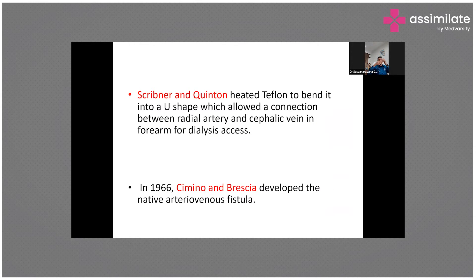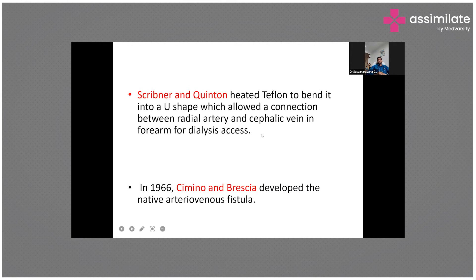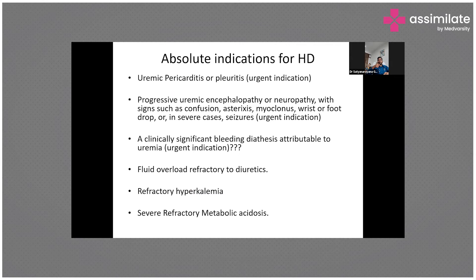For dialysis, we need vascular access. We take blood through an artery and pump it back into a vein; when the two are joined, it is called a fistula. The first access was the Scribner shunt — a metallic shunt placed between the radial artery and cephalic vein. The first true arteriovenous fistula was created by Cimino and Brescia — the Cimino-Brescia fistula — in 1966. The Scribner shunt caused frequent infections as a foreign body.